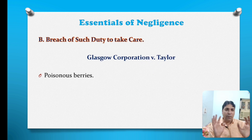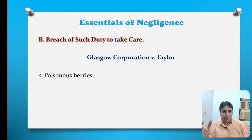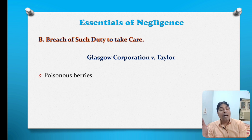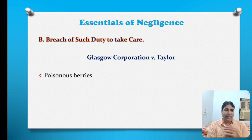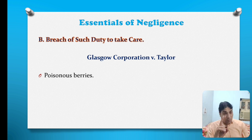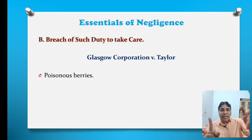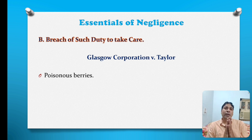In the case of Glasgow Corporation v. Taylor, the defendant grew a poisonous berry in his garden. A family visited that particular garden and the berries looked like cherries, which tempted the children. One child, under the misconception that the poisonous berries were cherries, ate the berry and died. A suit was filed against the Glasgow Corporation for the tort of negligence. The court held the defendant liable because the defendant grew a poisonous berry in his garden and had a duty to take care, but fixed no signboard regarding the poisonous nature of the berry — hence he breached his duty to take care, due to which the child died.